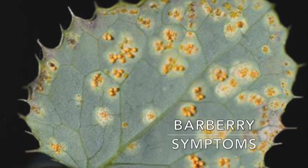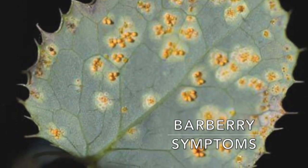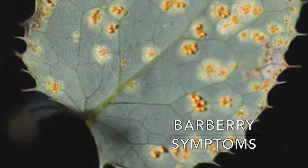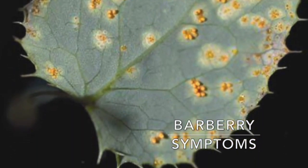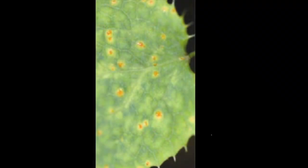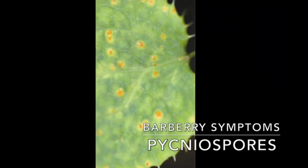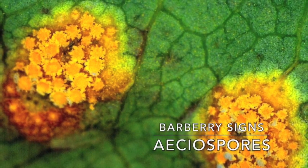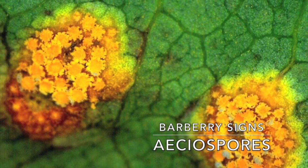Symptoms on barberry appear as irregular yellow-orange spots on the upper surfaces of leaves. Signs of stripe rust on barberry also occur on the leaves as pycnidia containing pycnidiospores, or aecial clusters containing aeciospores.